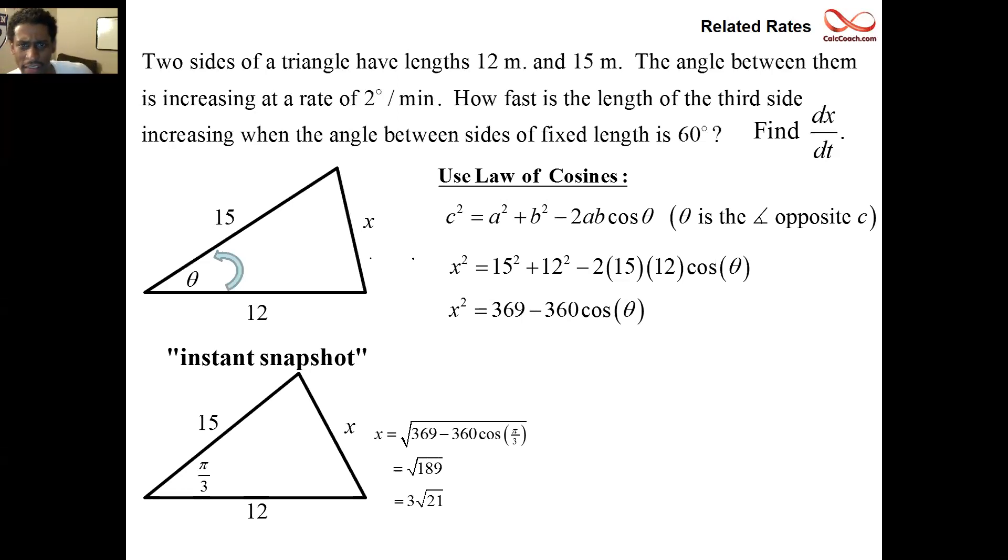Now, I did some sleight of hand here. I introduced theta in radians here when I said π/3. You see, because when we're dealing with calculus, we're dealing with derivatives. Anytime we mention angles, they need to be plugged in as radians. This unit is quantity. And so, this unit of 2 degrees per minute, we can't deal with that. We have to convert that.